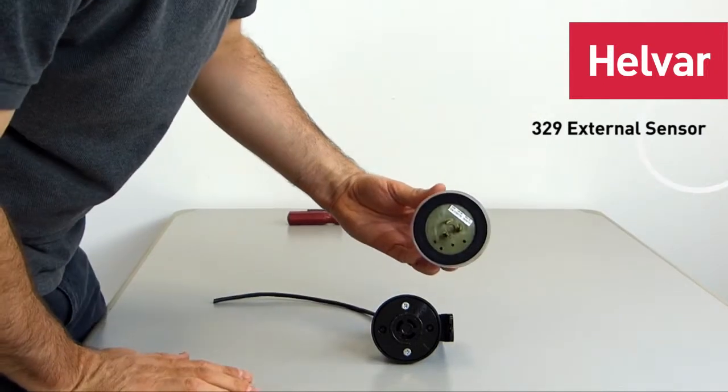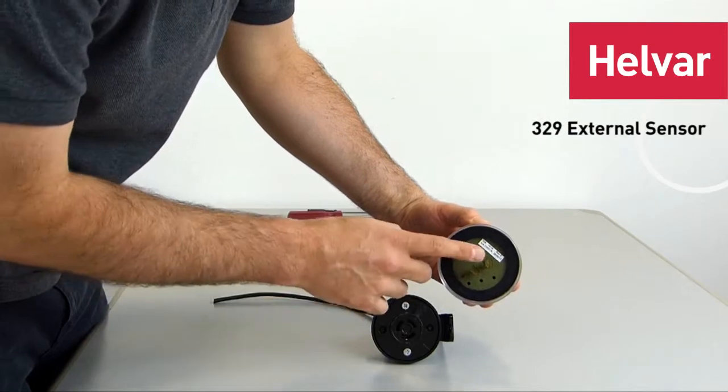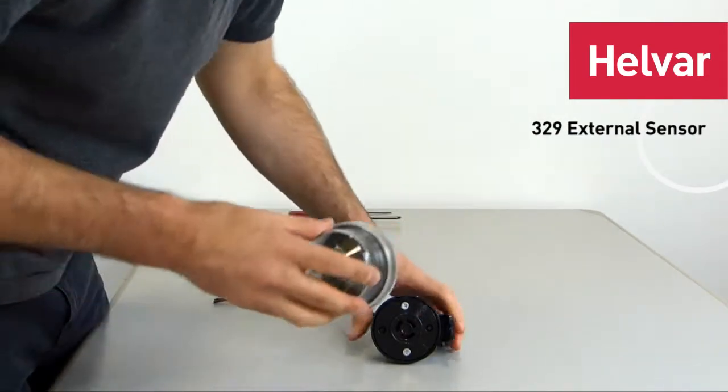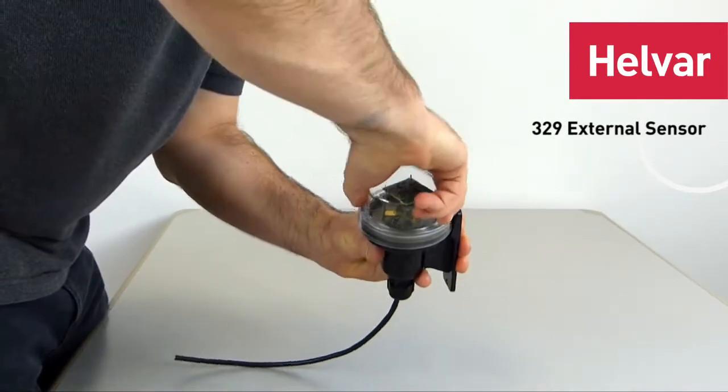And we'll just need to put the sensor head unit on the top now. You can see there are three tabs. There's a larger one here, larger than those other two. And there's a larger socket there. So we align it, push down, twist.